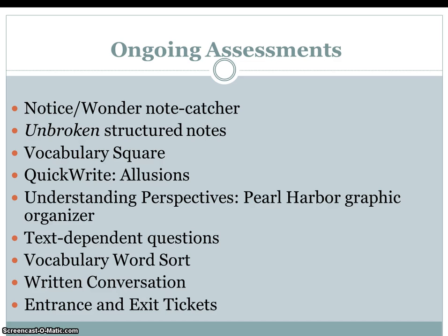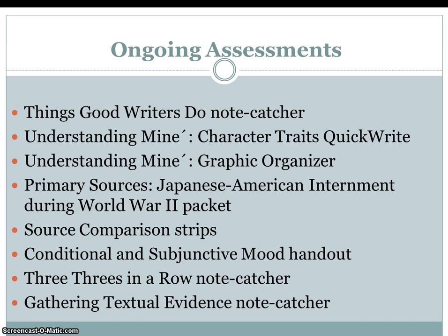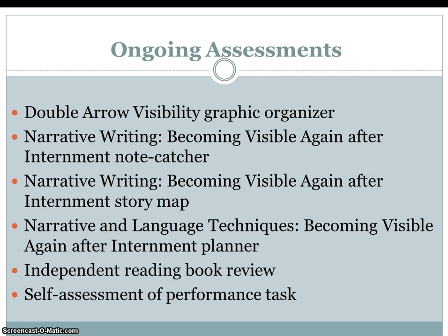Additional ongoing assessments include Vocabulary Square, Quick Write Illusions, Understanding Perspectives, Text-Dependent Questions, Vocabulary Word Sort, Written Conversation, Entrance and Exit Tickets, Things Good Writers Do Note Catcher, Understanding Mine, Character Traits Quick Write and Graphic Organizer, Primary Sources to Japanese-American Internment During World War II Packet, Sorts Comparison Strips, Conditional and Subjunctive Mood Handout, Three Threes in a Row, Note Catcher for Gathering Textual Evidence, Double Arrow, Visibility Graphic Organizer, Narrative Writing — Becoming Visible Again After Internment Note Catcher, Becoming Visible Again After Internment Story Map, Narrative and Language Techniques, Becoming Visible Again After Internment Planner, Independent Reading Book Review, and Self-Assessment of Performance Tasks.